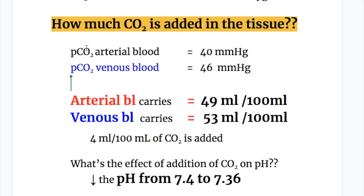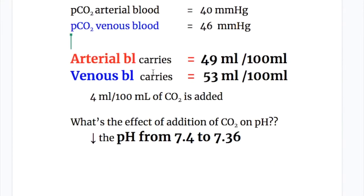How much carbon dioxide is added in the tissue? Arterial blood carries 49 ml of carbon dioxide per 100 ml, whereas venous blood carries 53 ml of carbon dioxide per 100 ml. There is a difference of 4 ml per 100 ml of carbon dioxide between the arterial and venous blood, which is added in the tissues.